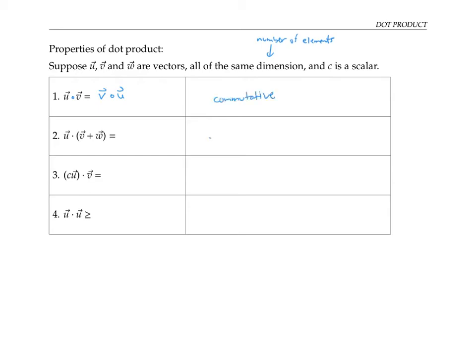Dot product is also distributive over addition. If I take u dot v plus w, that's the same thing as doing u dot v and adding u dot w. It's distributed in the other direction too. If I take v plus w and dot it with u, that's the same thing as v dot u plus w dot u.